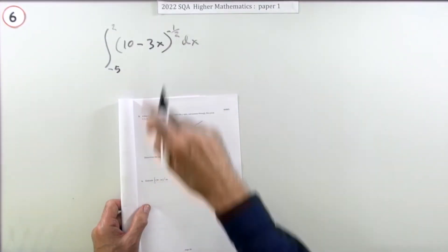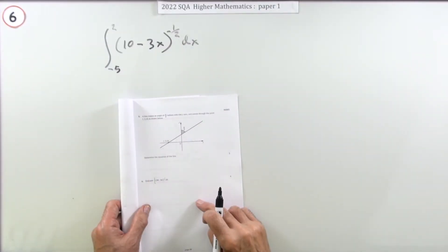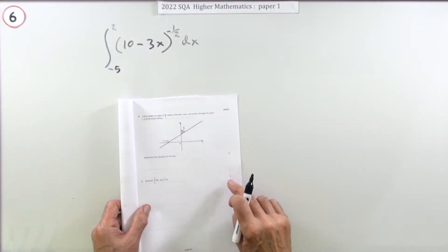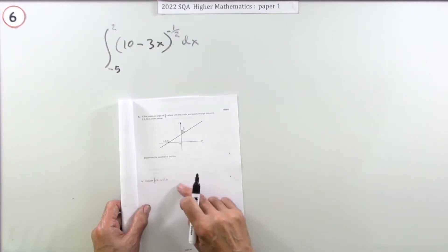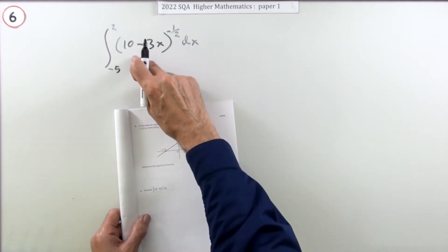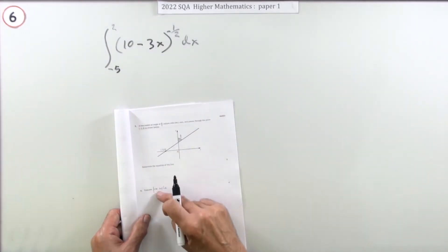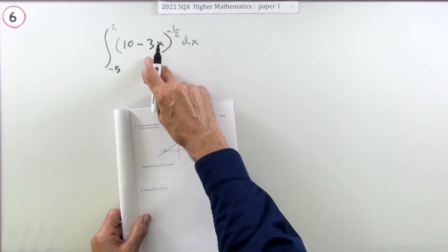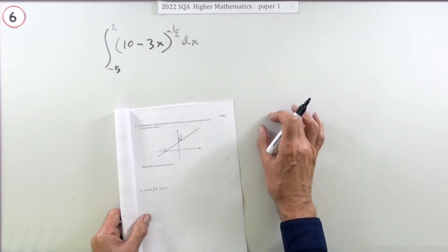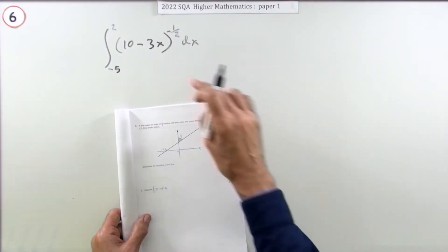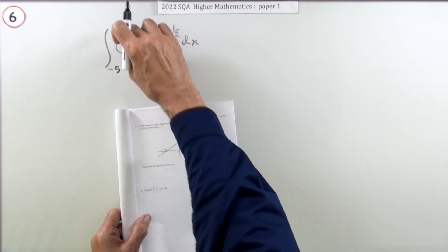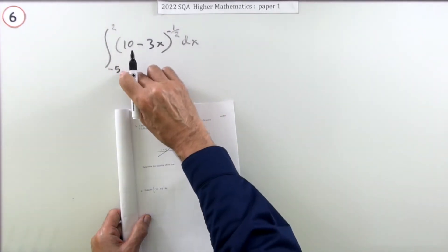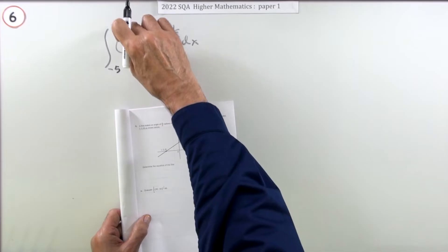Question six from the 2022 Higher Maths Paper 1 — four marks. Evaluate this definite integral. It's definite because you're going to get a final answer, and definite because you've got two limits: a lower limit of negative five and an upper limit of two.